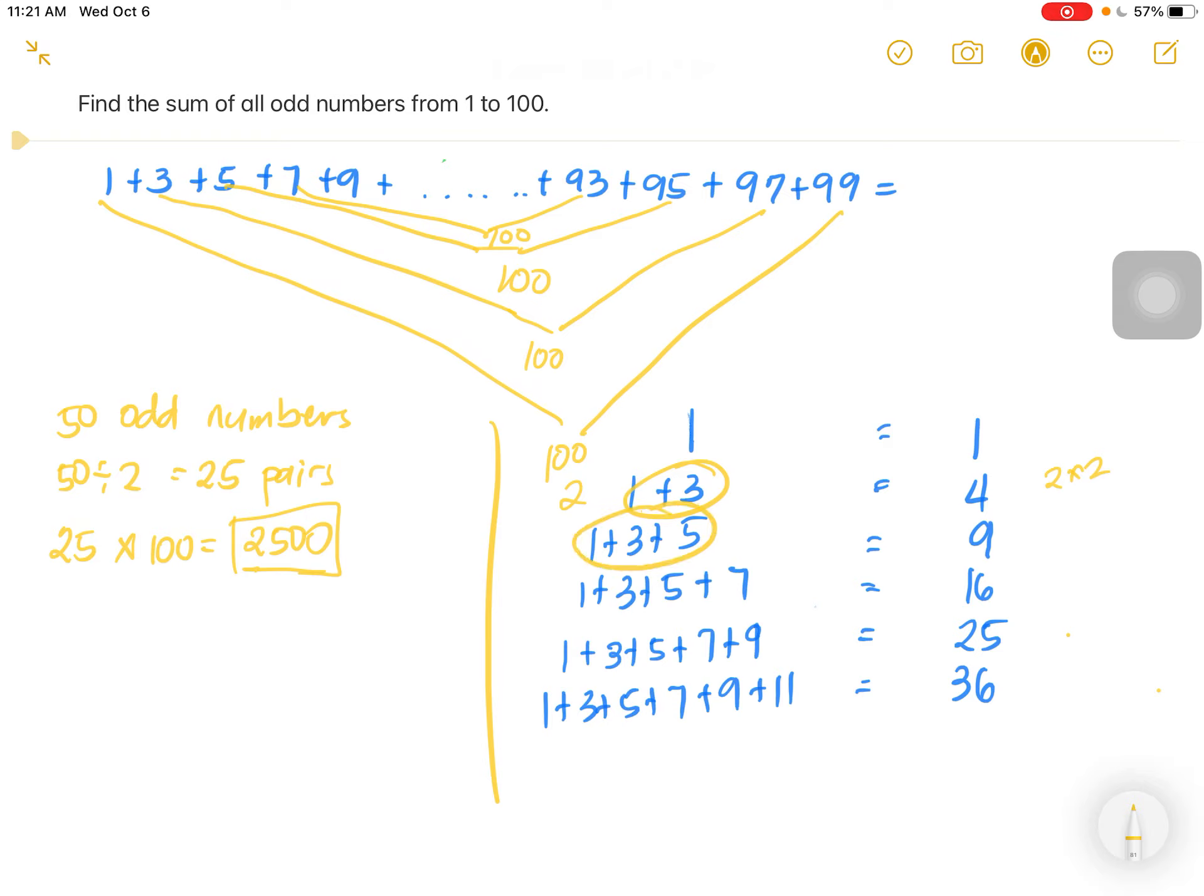3 odd numbers, 3 times 3 is 9, and 6 odd numbers, 6 times 6 is 36. So since we are adding 50 odd numbers, then that could be 50 times 50, 2,500.